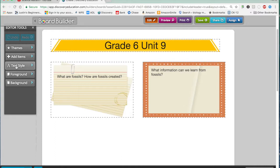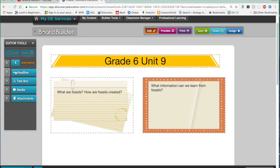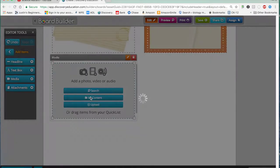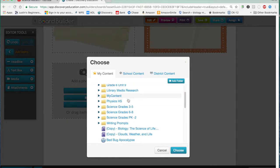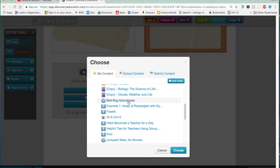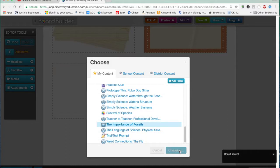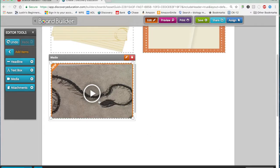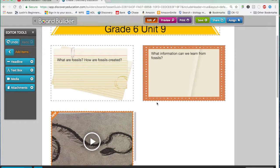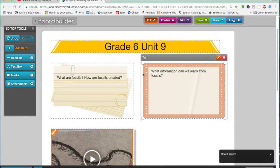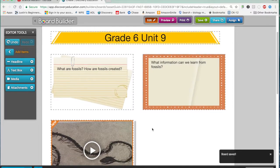So now let's say that I want to add an item. I want to add media this time, and here I'm going to add the media from my content. I'm going to scroll down to that video, the importance of fossils, importance of fossils, choose, and now that specific video has been added here. So that's another way to use the Discovery Ed website to search for your videos, put them in my content, and then insert them into the board.